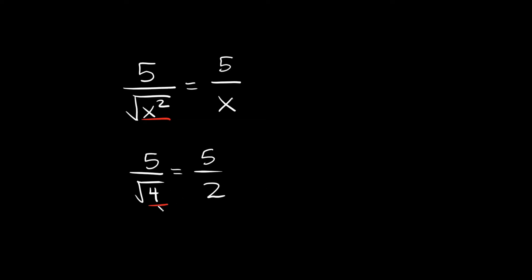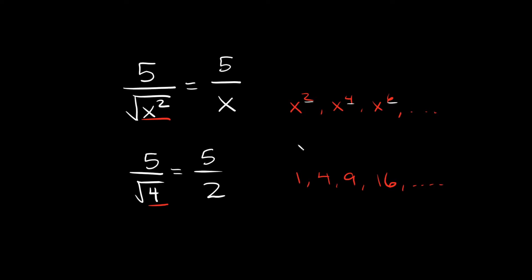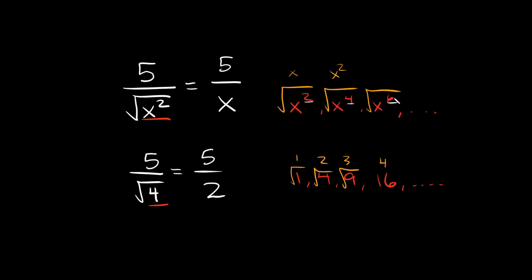Whenever you have perfect squares within your radicals you don't have to rationalize them because they are already rational. Perfect squares for numbers are 1, 4, 9, 16, 25, 36, and so on. For variables it would be x squared, x to the 4th, x to the 6th, x to the 8th, x to the 10th — any variable with an even exponent. The square root of 1 is 1, the square root of 4 is 2, the square root of 9 is 3, the square root of x squared is x, the square root of x to the 4th is x squared, and the square root of x to the 6th is x cubed.